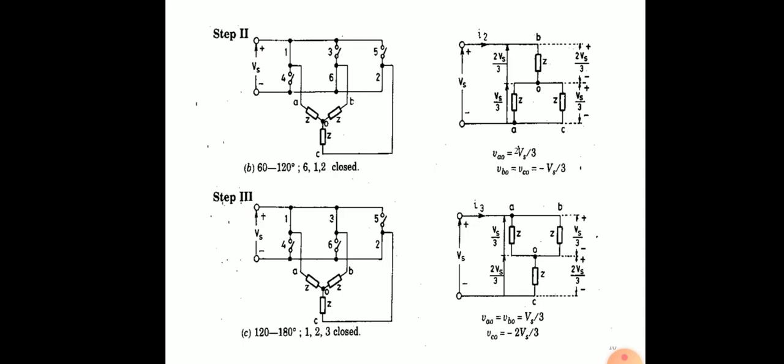So output phase voltage VAO and VCO is Vs/3 and VBO is minus 2Vs/3 because B is connected to the negative terminal. In step 2, thyristors 6,1,2 conduct from 60 to 120 degrees. Terminal B is connected to the positive group, terminal A and terminal C are connected to the negative terminal. Voltage VAO is 2Vs/3, VBO and VCO are minus Vs/3. In step 3, thyristor 1 is connected to the positive terminal, thyristor 3 is connected to the positive terminal, and thyristor 2 is connected to the negative terminal. Terminals A and B are connected to the positive supply and terminal C to the negative supply, so VCO is minus 2Vs/3 and VAO, VBO are Vs/3.